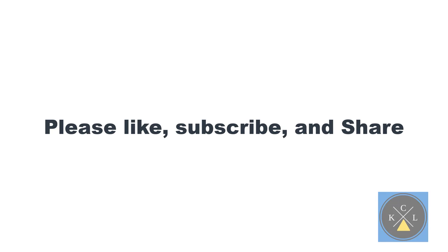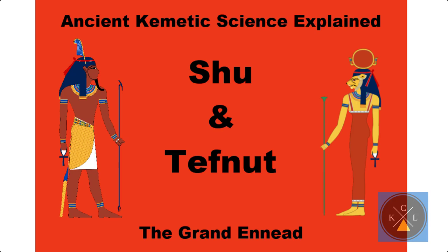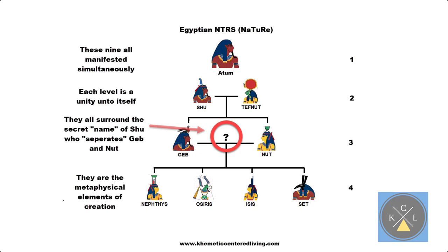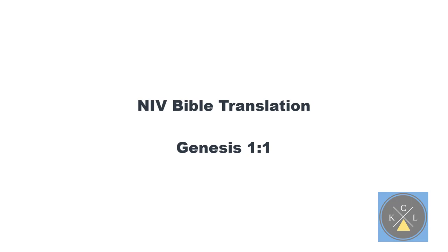Now if you've watched the first two videos of this series on Atun and Shu and Tefnut, then you've gotten a basic understanding of the ancient African science of creation. These myths have been told orally for over 10,000 years or more. Now let's look at where the African spiritual science shows up in the Bible. The Kemetic science shows up in Genesis chapter 1.